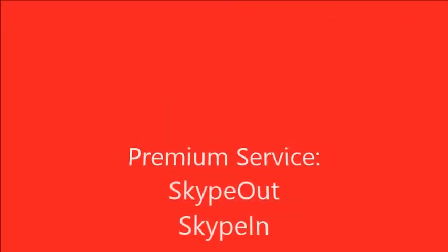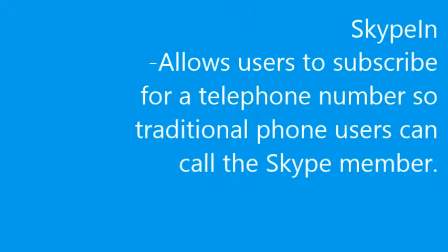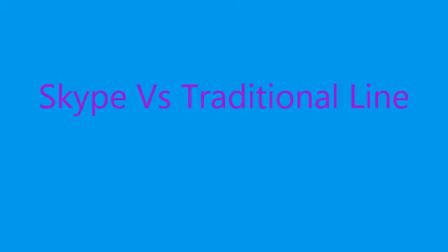However, it does have a premium service, and by utilizing certain proprietary protocols, Skype is able to offer additional services such as Skype Out and Skype In. Skype Out allows Skype users to call traditional phone lines for a rate typically lower than traditional phone lines — for example, 2 to 3 cents a minute, with monthly plans starting as low as $2. Skype In allows members to subscribe to a monthly service in exchange for a telephone number that allows traditional lines to contact a Skype member. Because the costs associated with traditional telephones are so much higher than Skype's options, it becomes a much less expensive replacement for traditional phone lines.